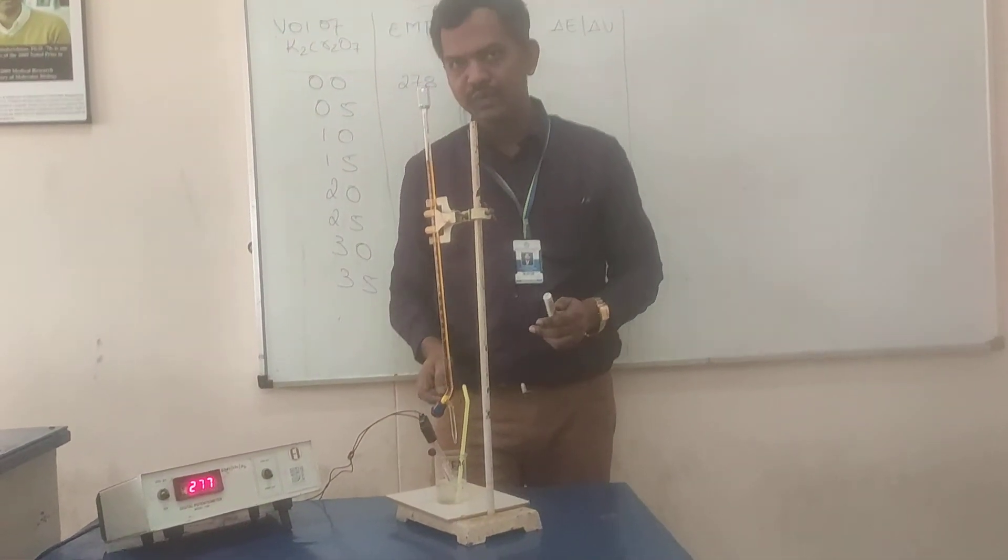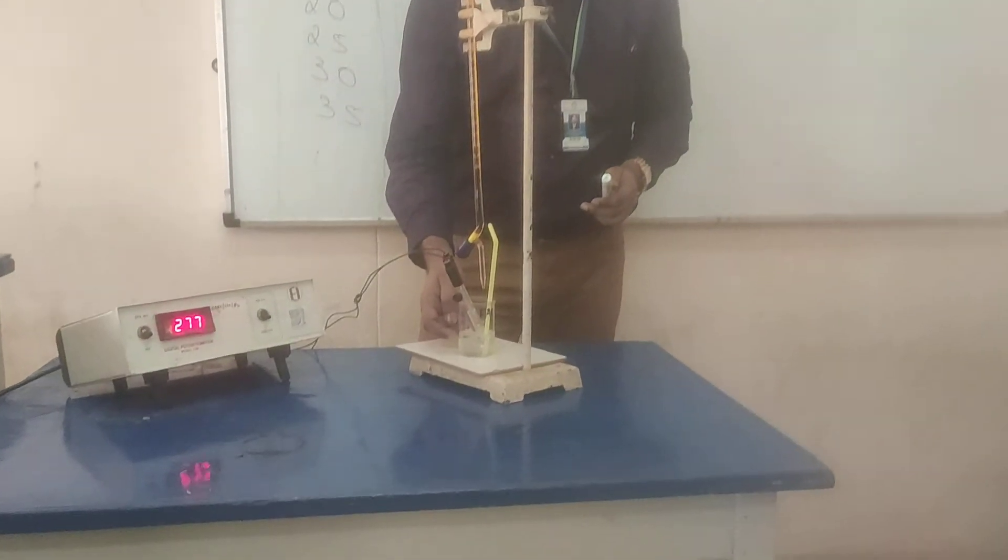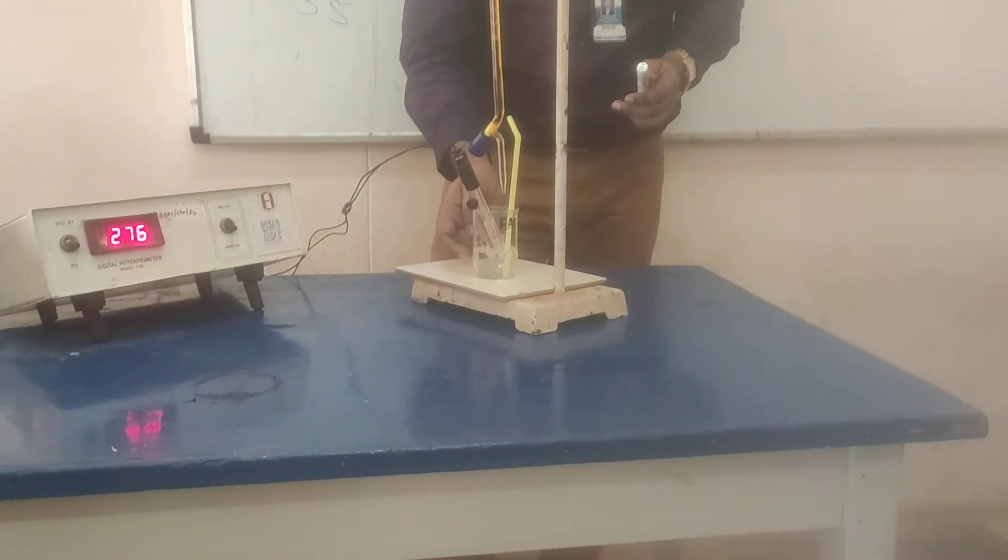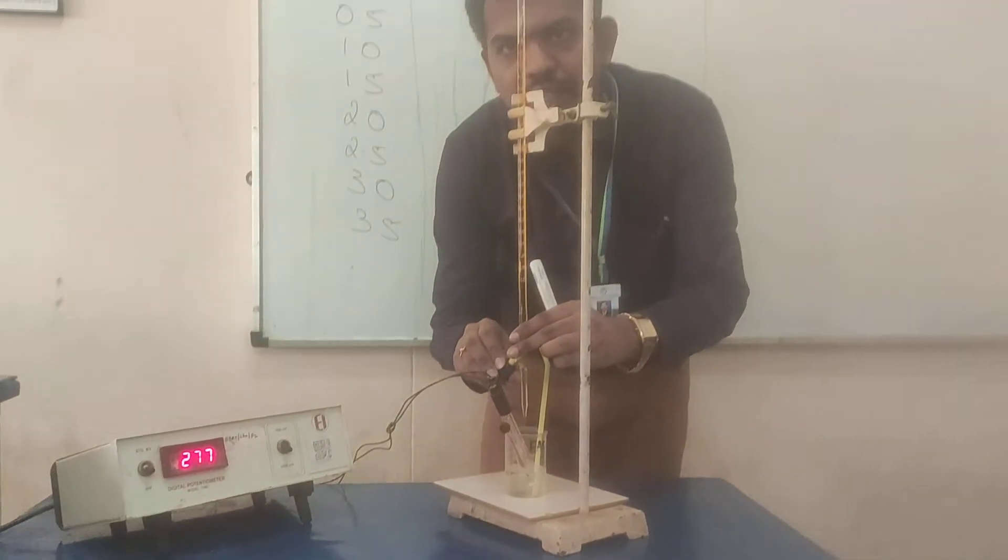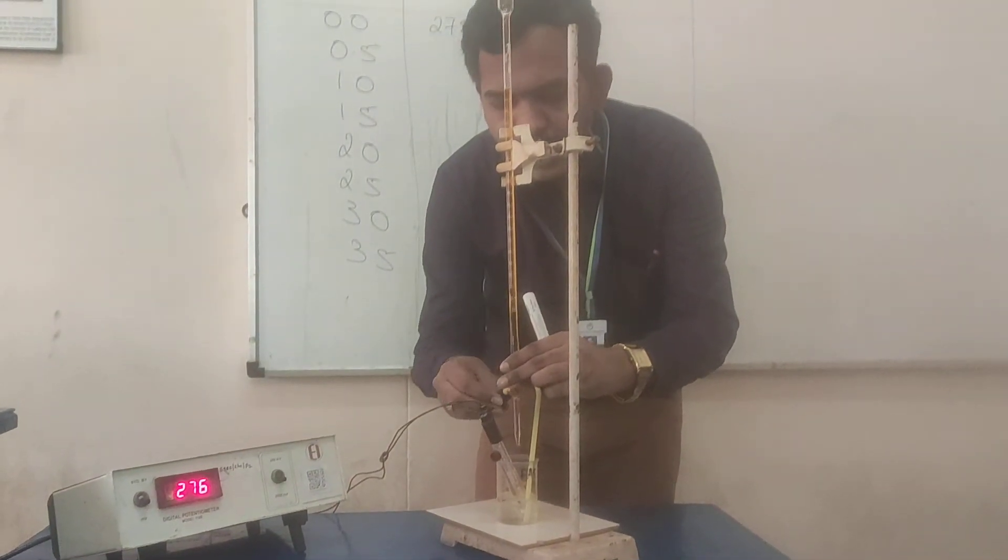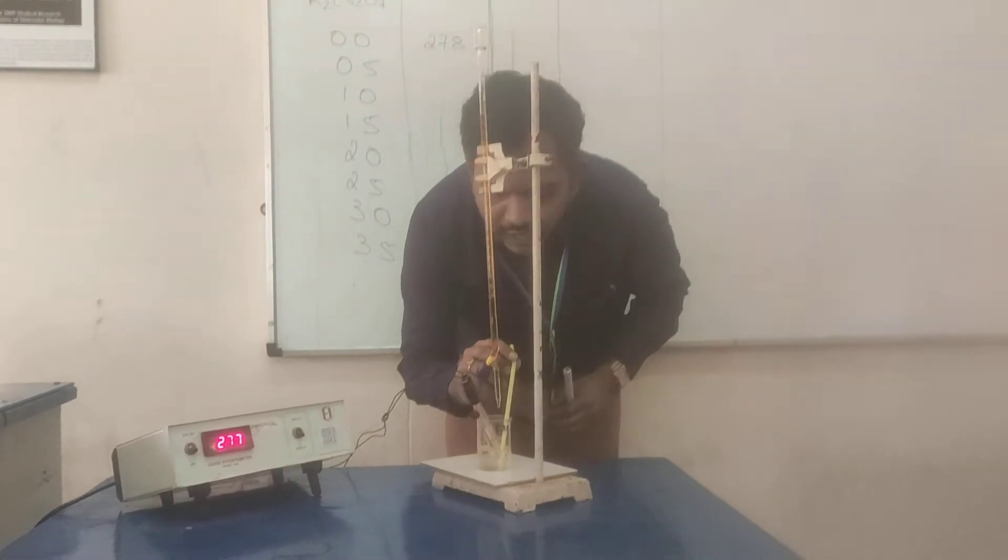You can see here, it is colorless. Before adding K₂Cr₂O₇, you can see it is very clear here. It is colorless. Now, I am going to add 0.5 ml of K₂Cr₂O₇. When I add K₂Cr₂O₇ 0.5 ml...